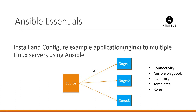Hello everyone. In the last video, we have seen how to install and configure the Nginx application to multiple Linux servers using Ansible Playbook. We have written an Ansible Playbook and used the inventory to install and configure the Nginx server in all three target servers. In this video, we will see how to create an Ansible role and how to use that role in the playbook to perform the required configuration in the target servers.